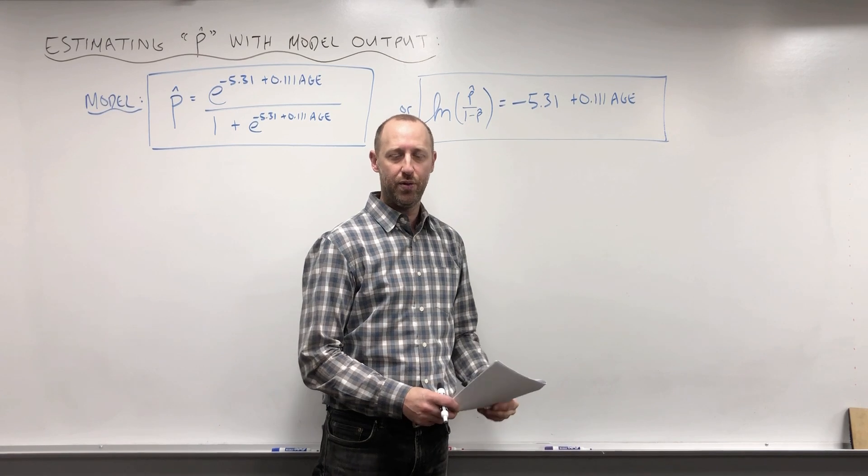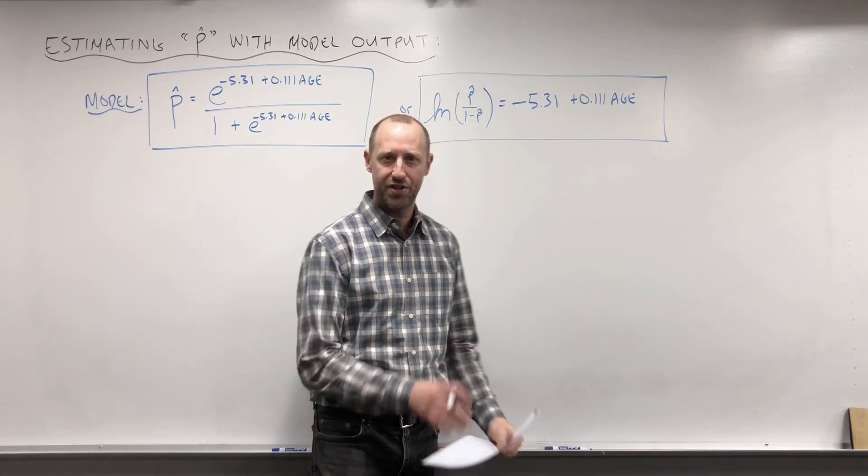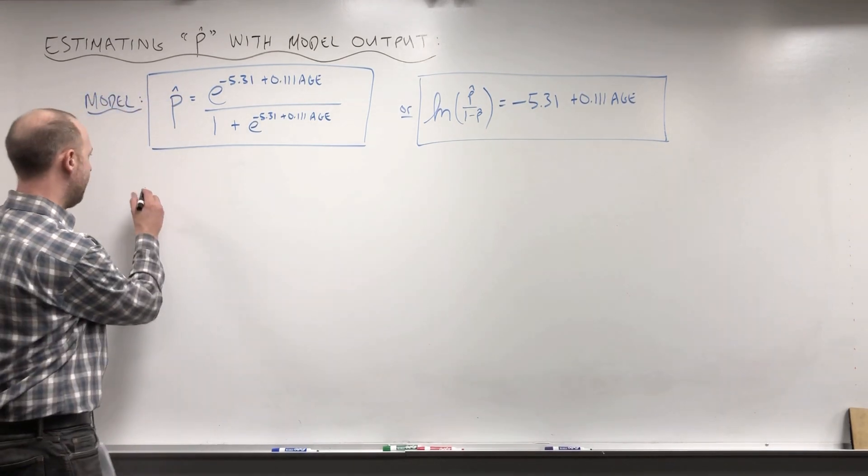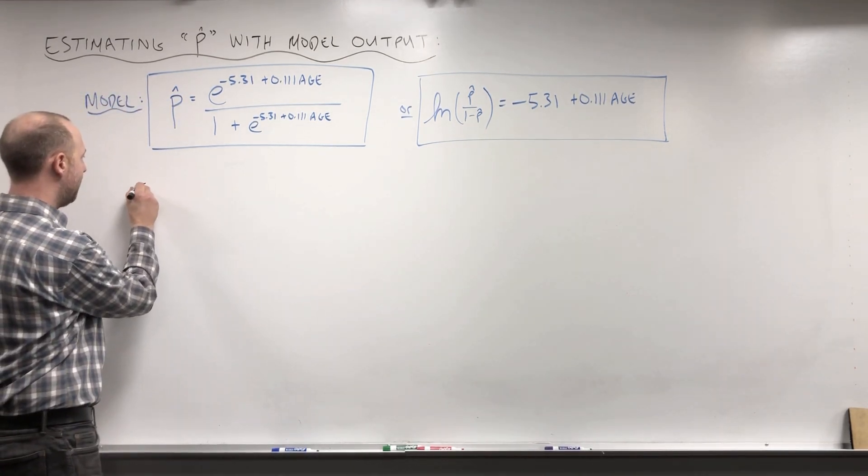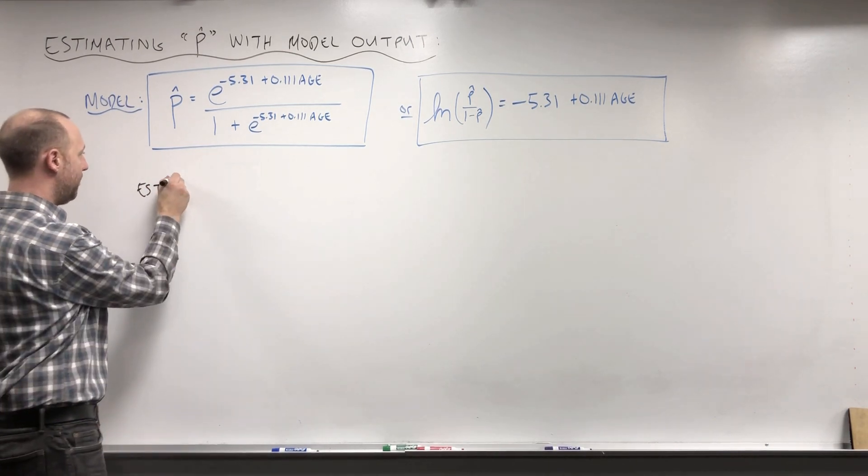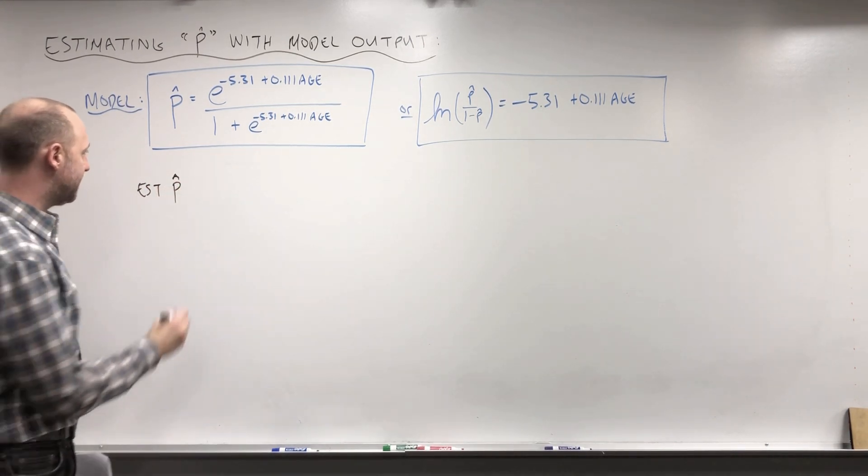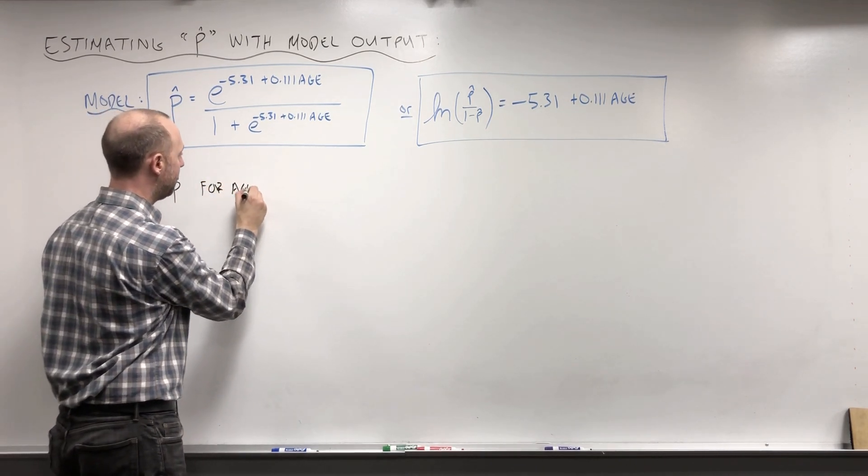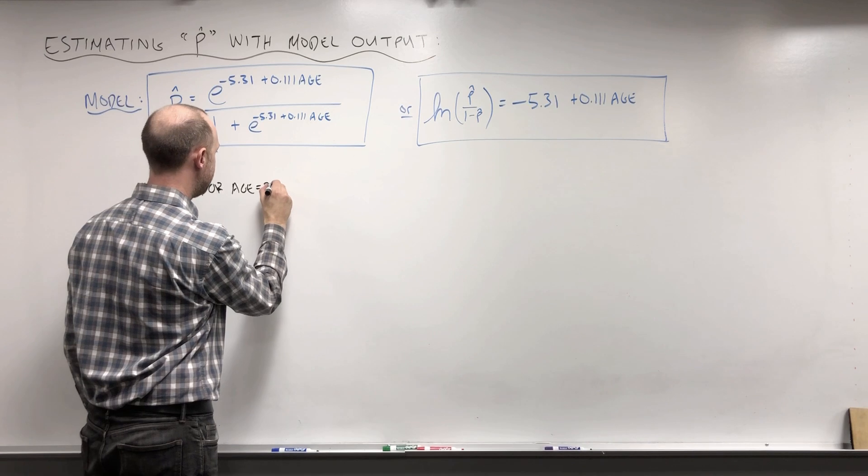First, I want to look at getting the estimated probability of coronary heart disease. Let's say for someone whose age is 32.